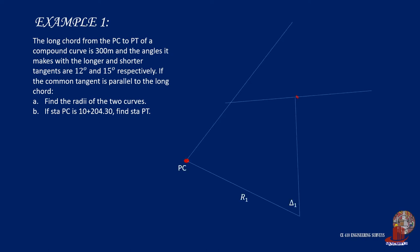If station PC is 10 plus 204.3, find station PT. The first curve from PC has an angle of 12 degrees and the second curve has a central angle of 15 degrees. With both central angles given, we can compute the delta of the compound curve as their summation, 12 degrees plus 15 degrees, which equals 27 degrees. Another given is the length from PC to PT, which is 300 meters.